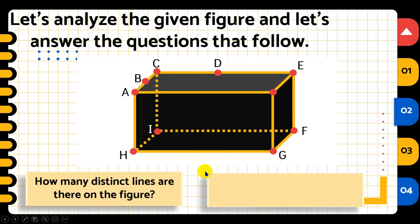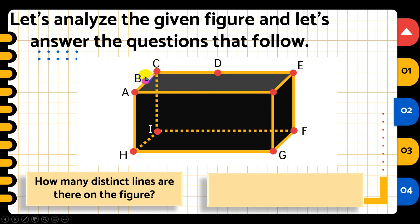Next question: how many distinct lines are there on the figure? To name a line, we need at least 2 points on that line. So, how many lines can we name in this figure? The first line: we have three points on it, and since we need at least 2, we can already name a line from it.